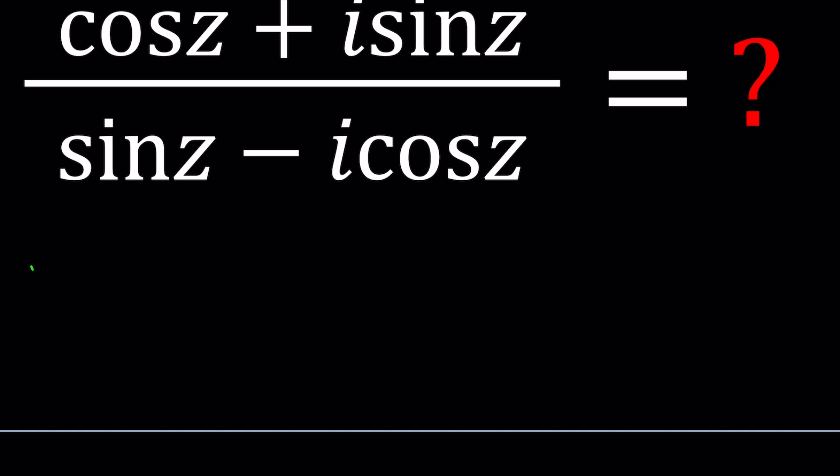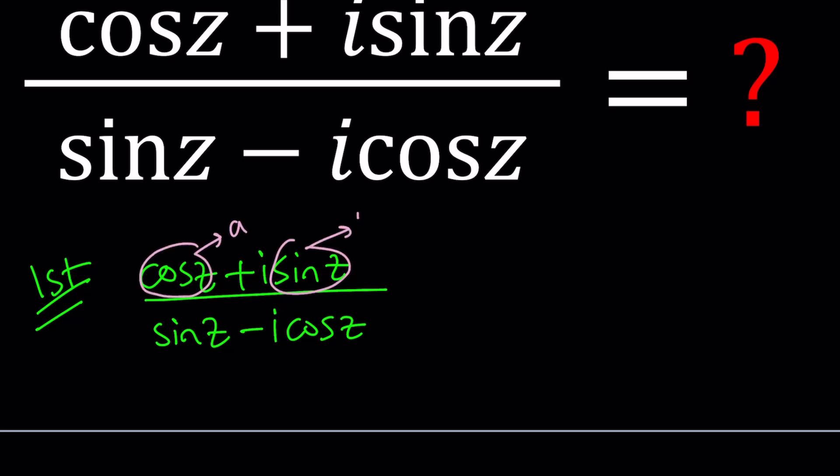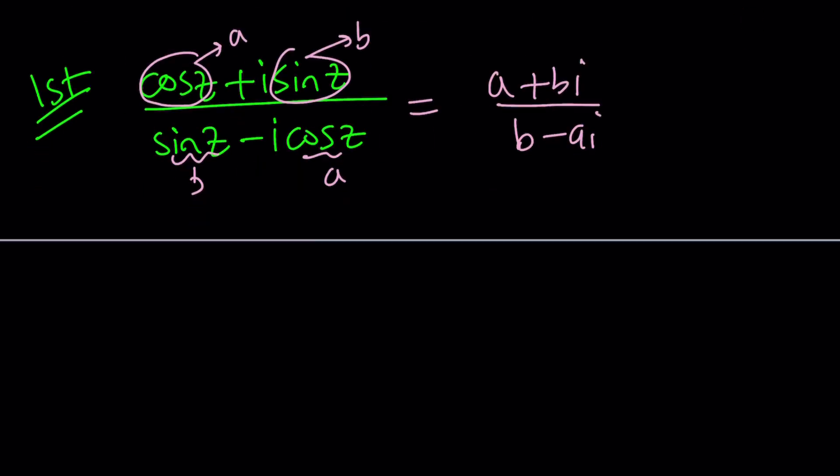Now for my first method, I'm going to use what is pretty much common with these kinds of problems. I do see something like A plus B I and B minus A I. I could do that substitution. If I call this A and this B, then this would be B and this would be A. So my expression would look like A plus B I divided by B minus A I.